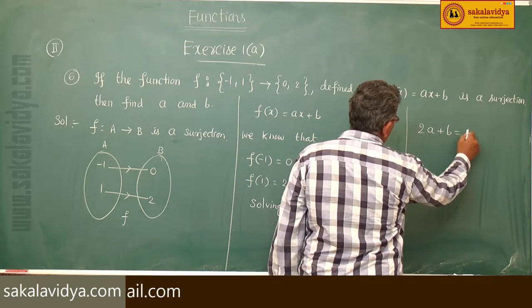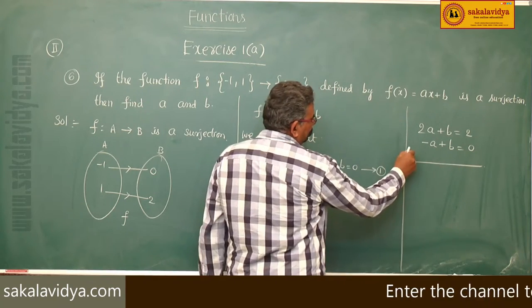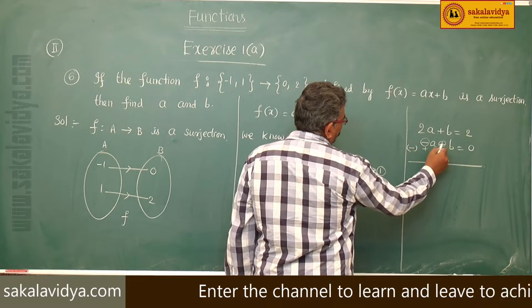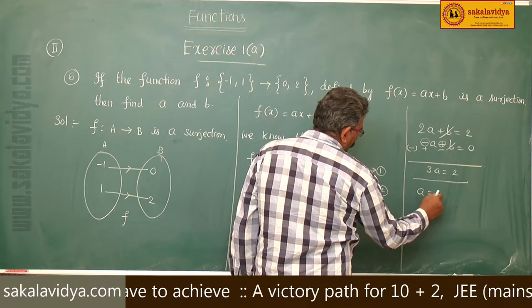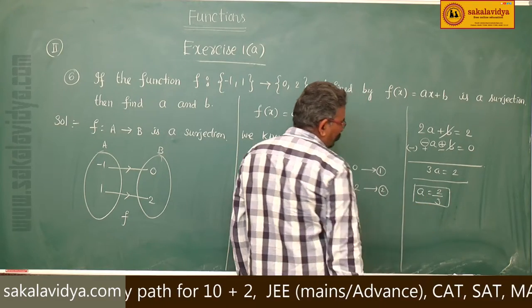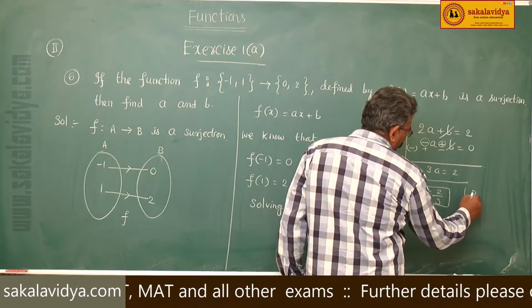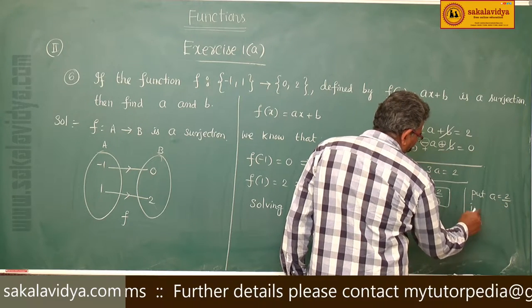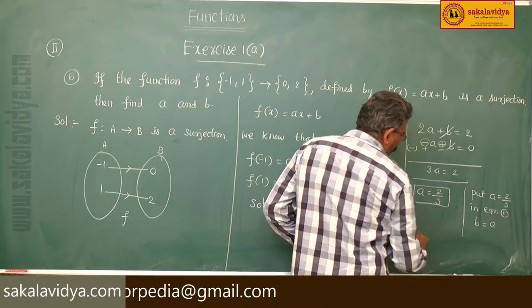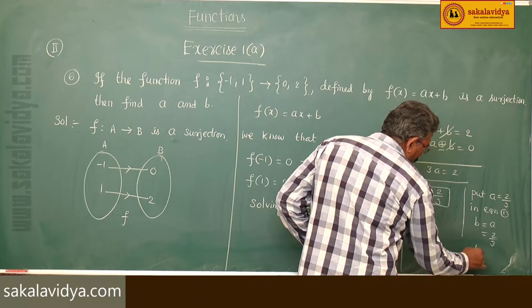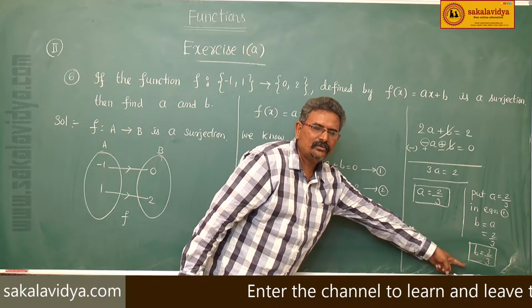From equation 2: a plus b equals 2. From equation 1: minus a plus b equals 0. Subtracting, 3a equals 2, so a equals 2 by 3. Substituting a equals 2 by 3 into equation 1, b equals a, so b is also 2 by 3. Hence, a equals 2 by 3 and b equals 2 by 3.